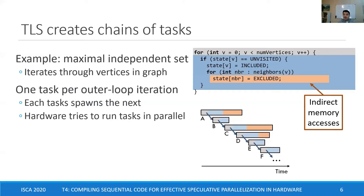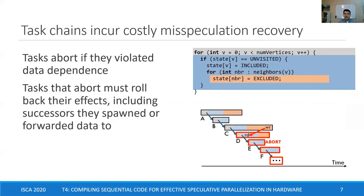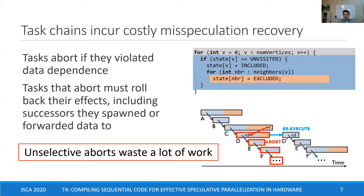Some tasks do manage to run in parallel, such as tasks C and D, but these tasks do not necessarily perform independent computations. Hardware must track memory accesses to discover data dependencies at runtime. For example, task D may read from a location in memory that is later written by task C, violating a data dependence through memory. To recover, task D must abort and re-execute. When aborting task D, we undo all its effects, including aborting other tasks that D spawned or passed data to, such as tasks E and F. Prior TLS architectures recover from mis-speculation by conservatively aborting and re-executing all later tasks across the system, which may often bring a significant fraction of the system to a halt. Thus, a single abort results in un-selectively aborting a large number of other tasks, even if those other tasks, such as E and F, may have actually been performing independent work.